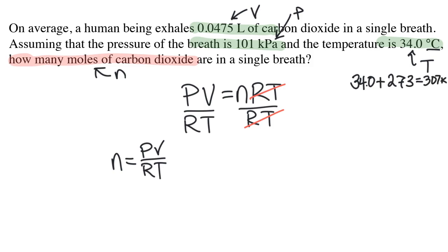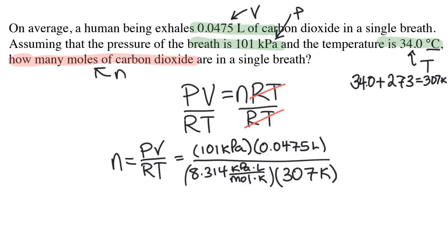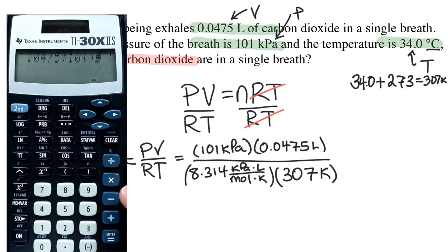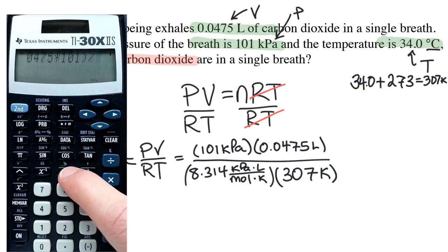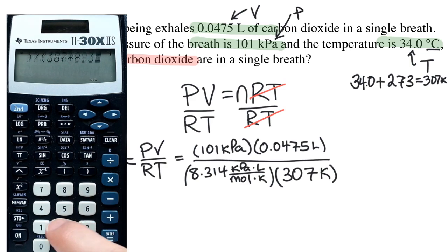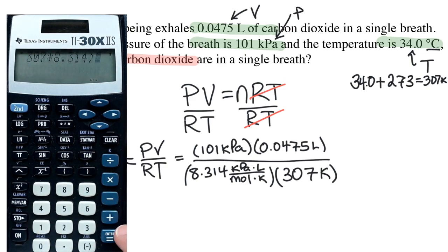Now I can plug all the variables into the equation. V is 0.0475, P is 101, and T is now 307. And of course, R is the constant 8.314. I'm going to plug all of this into my calculator: 0.0475 times 101, divided by 307 times 8.314.